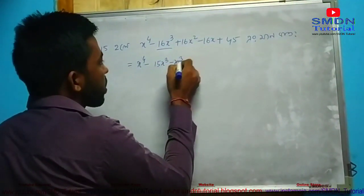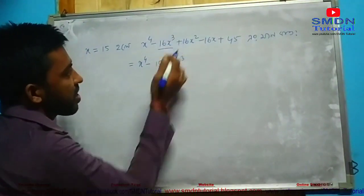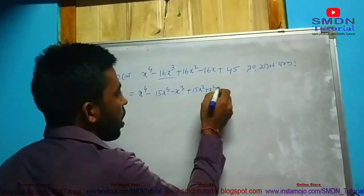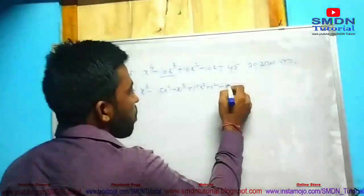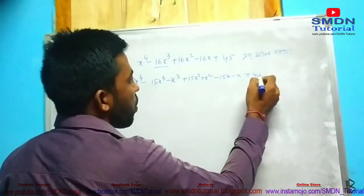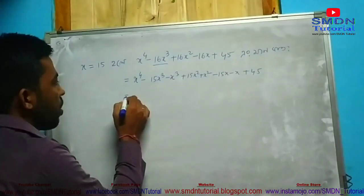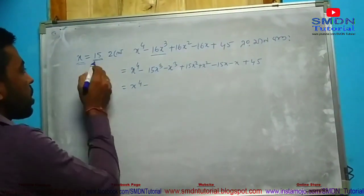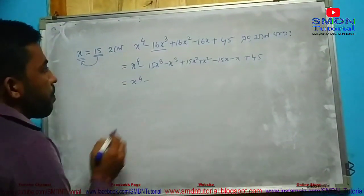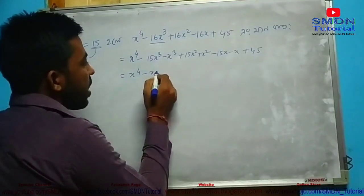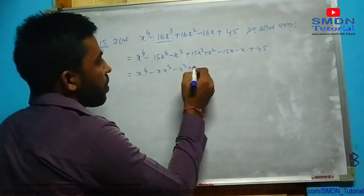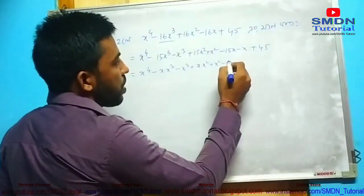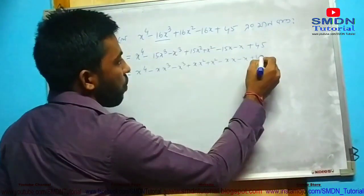We get minus 15x cubed minus x cubed, and minus 15x plus 45. So x to the power 4 minus 15x cubed, then x into x cubed minus x cubed, plus x into x squared plus x squared, minus x into x minus x, plus 45.